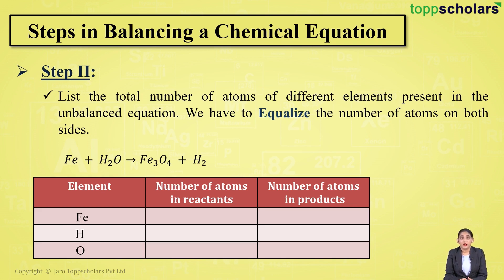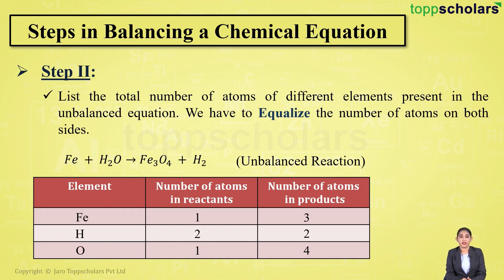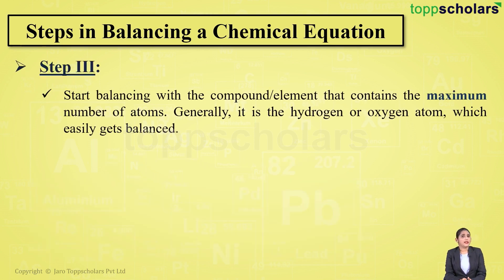Iron atoms: one on the reactant side, three on the product side. Hydrogen atoms: two on the reactant side, two on the product side. Oxygen atoms: one on the reactant side, four on the product side. Since the number of atoms on both sides is not equal, this is an unbalanced reaction.